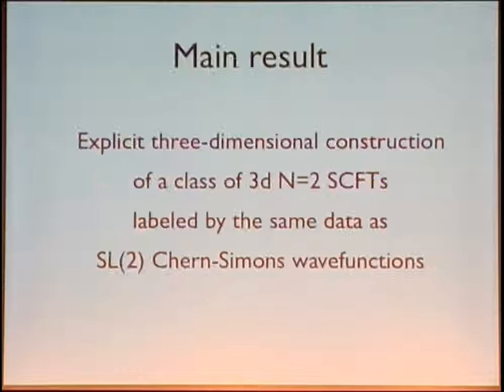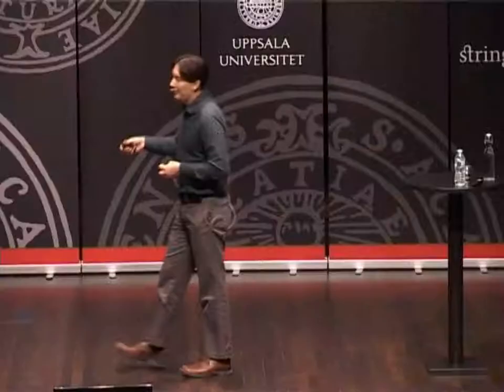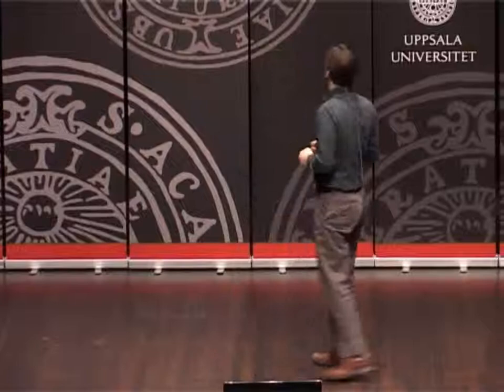We ended up with an explicit class of three-dimensional conformal field theories, which are just defined by abelian Chern-Simons-matter theories — very, very simple theories: chiral multiplets, some gauge fields, some superpotentials. The superpotentials are the only slightly intricate part of the construction, because sometimes you are forced to write superpotentials which include monopole operators, which are not made out of elementary fields. But otherwise the theories are really, really very simple.